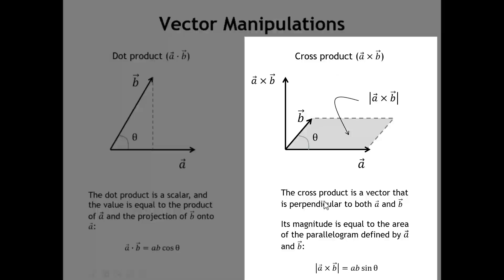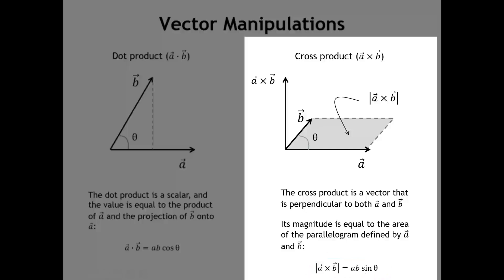The cross product is a vector, and that vector must be perpendicular to both A and B. The magnitude of the cross product equals the area of the parallelogram defined by vectors A and B. So the formula for the magnitude of A cross B is the magnitude of A times the magnitude of B times the sine of the angle between them. Almost the opposite of the dot product, the magnitude is maximum when the two vectors are perpendicular—in that case it equals A times B—and goes to zero when the two vectors are parallel.